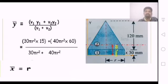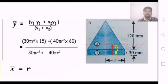The formula for center of gravity is: y-bar equals v1 y1 plus v2 y2 divided by v1 plus v2. The answer is 40.7 mm.